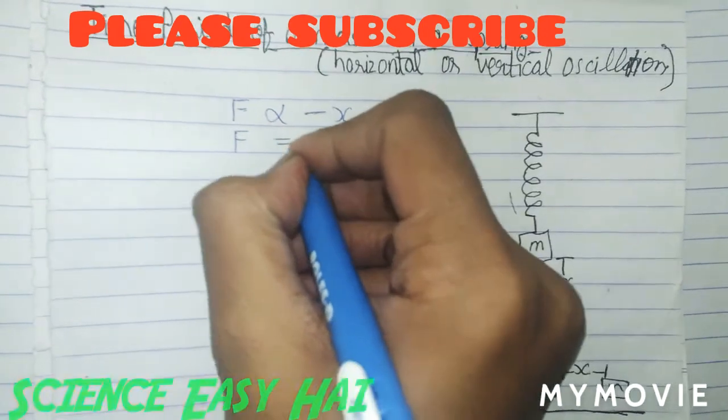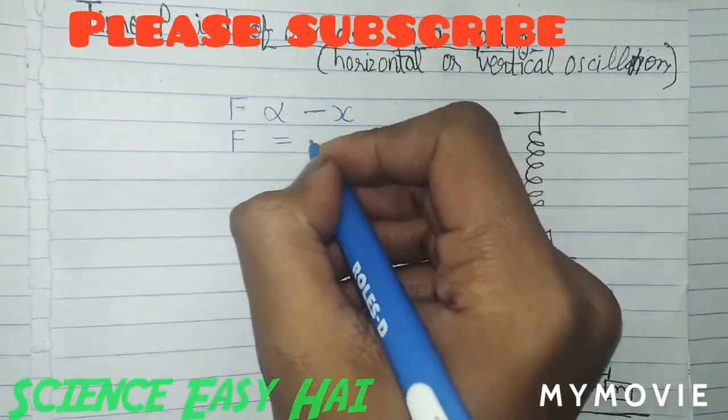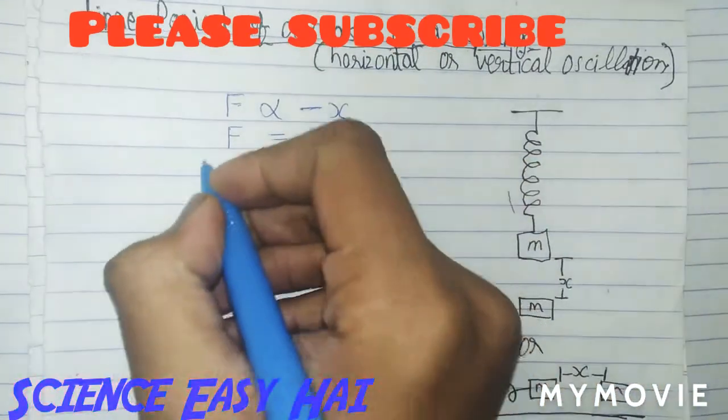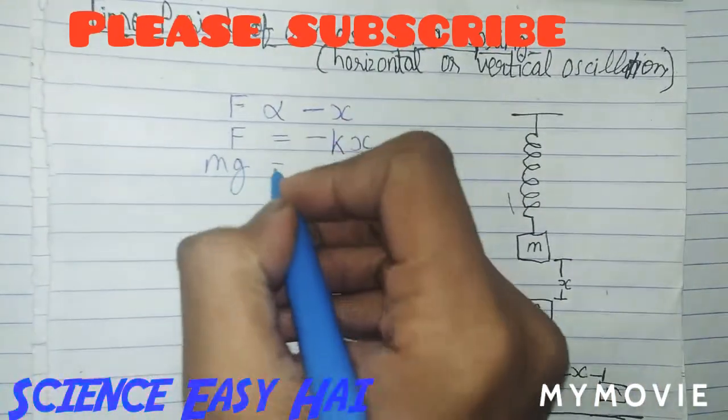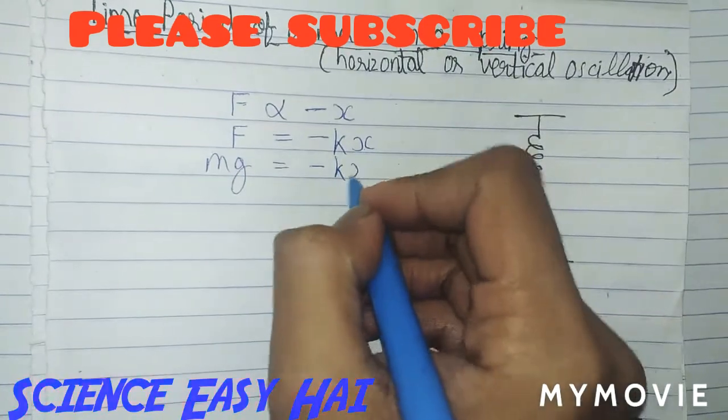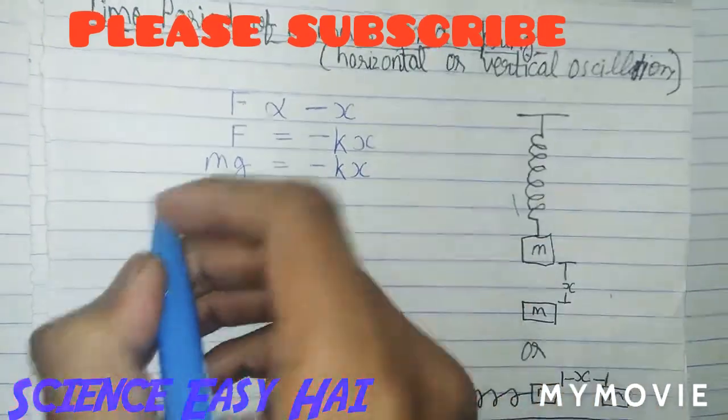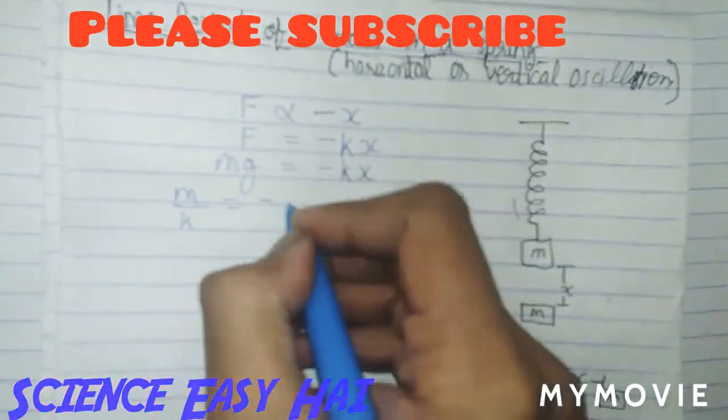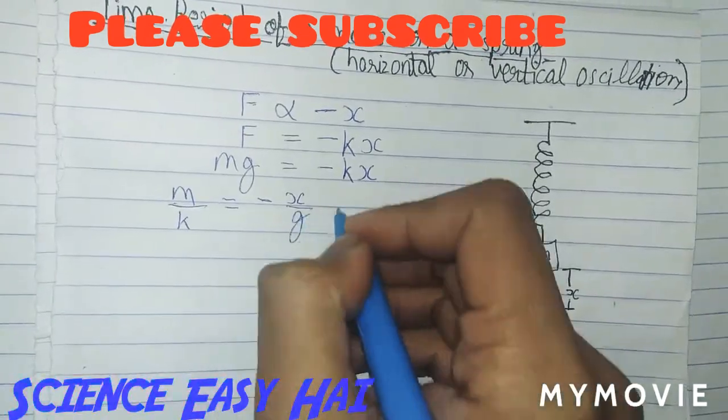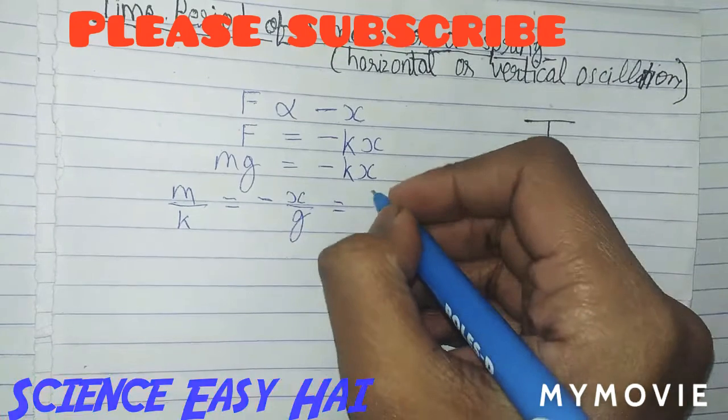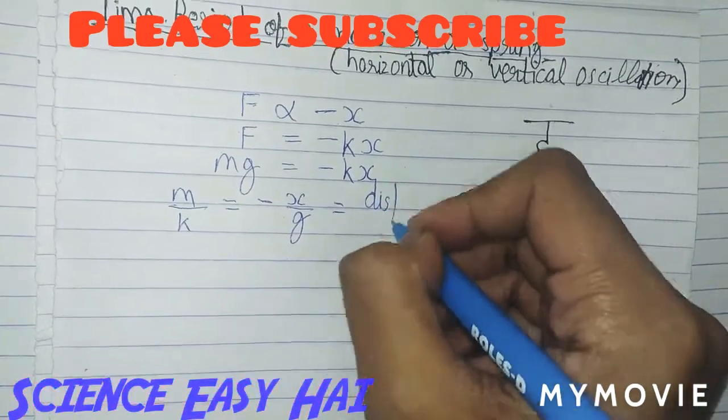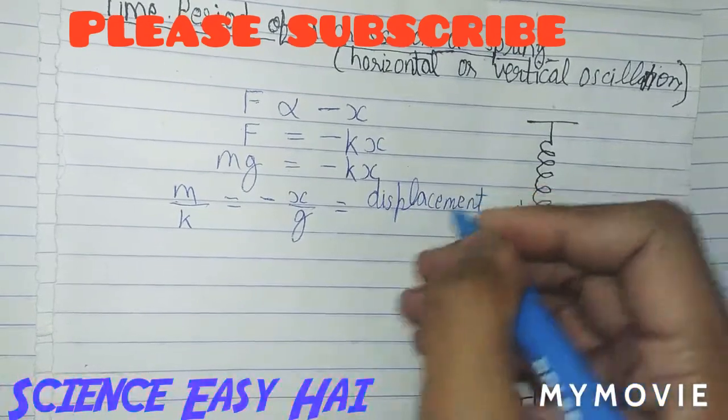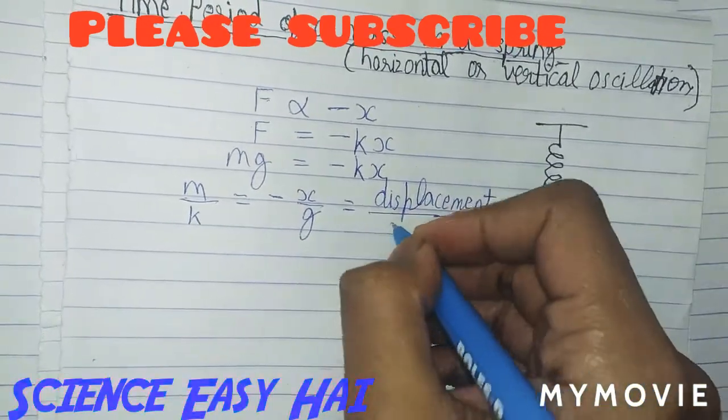For removing the proportionality sign, we will put here K as a constant. So M upon K is equal to minus X upon G, which is equal to displacement upon acceleration.